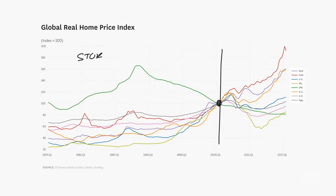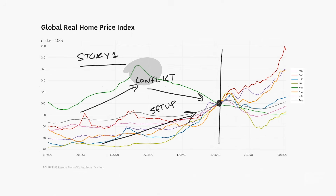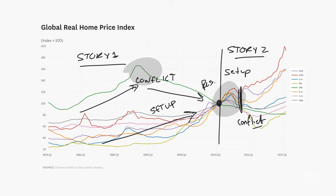I can look backward and say home prices rose steadily in most places in the world for 30 years, except for Japan, which experienced a three-decade-long bubble. That is a perfectly good story. The setup is home prices rose steadily in most places, except in Japan — which is the conflict — and the resolution is it experienced this 30-year bubble. Then working from 2005 to the right, I have another story: there was a smaller housing price bubble in most places except Japan. But something different happened this time — the markets bifurcated. You ended up with Australia, Canada, and New Zealand rising again, looking much like a bubble, and the rest falling then rising back to about 2005 levels.